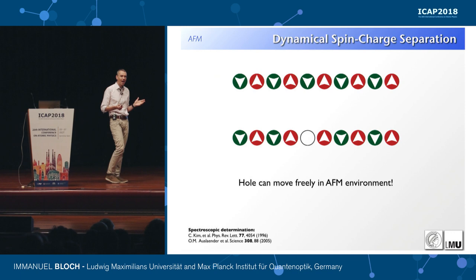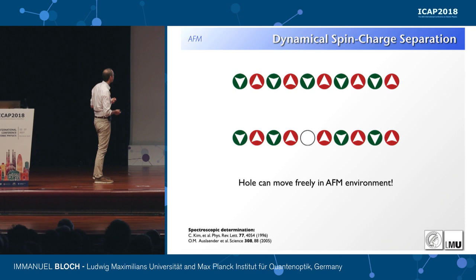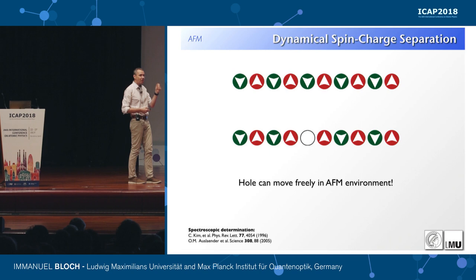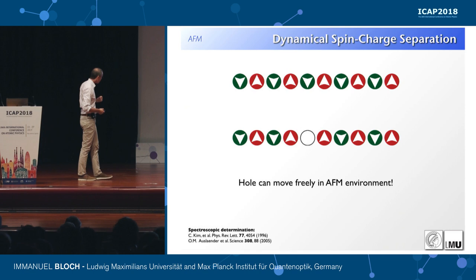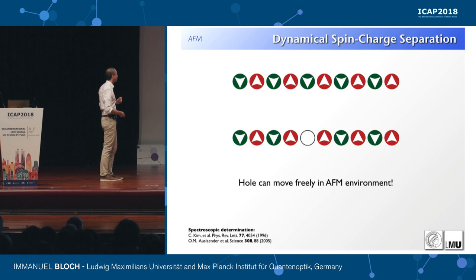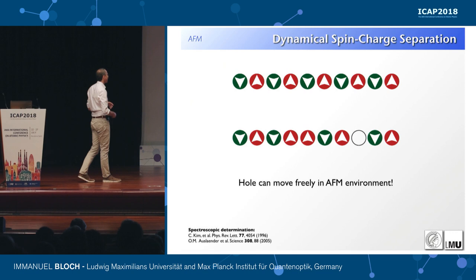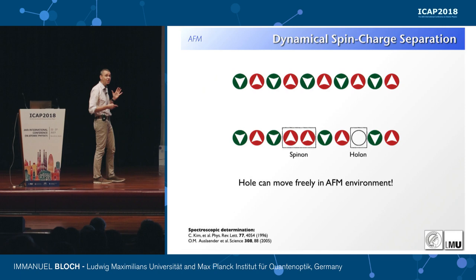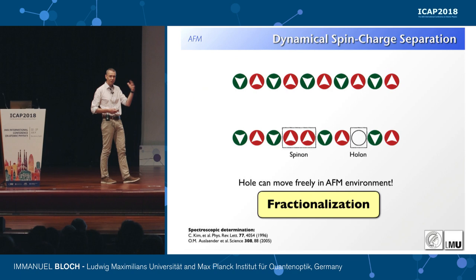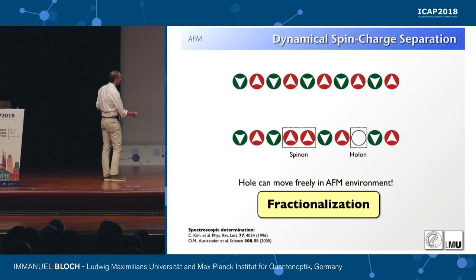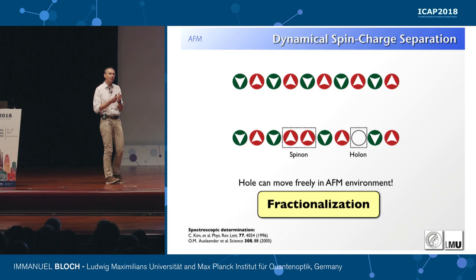The first phenomenon I want to explain is spin-charge separation — one of the most profound phenomena in condensed matter physics. Imagine you have a Heisenberg chain and you violently remove one particle, or equivalently inject a hole with spin-1/2 into the system. What happens is that the hole can move freely through the system but leaves behind a spin excitation — a spinon. The quantum numbers of the injected hole become fractionalized: spin and charge are now carried by two new quasiparticles — the spinon carrying spin-1/2, and the holon carrying charge but being spinless.